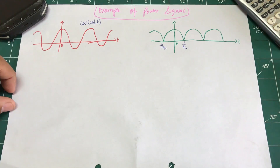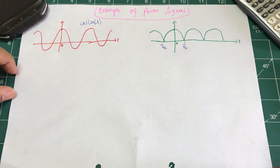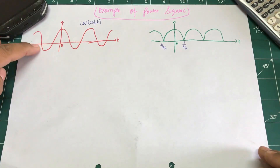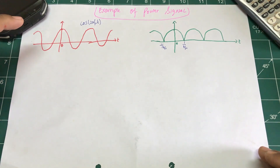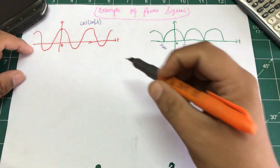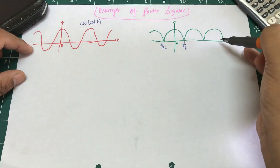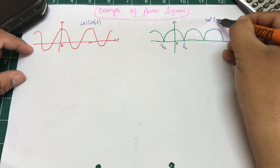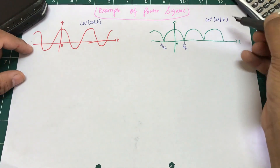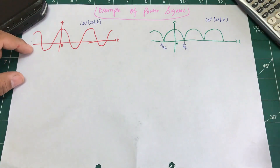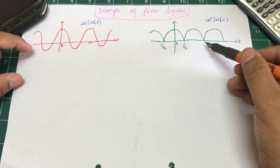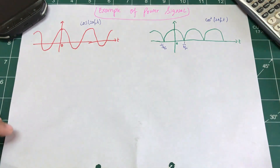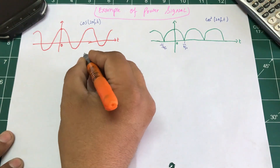Welcome back. Let's do an example of a power signal. Power signals are mostly periodic signals, so let's take an example of a periodic signal — a cosine function: cos(2πf₁t). Once you take the squared of this cosine function, it gets shifted on the spectrum. This is how a cos squared looks. Here's the definition I have for a power signal.